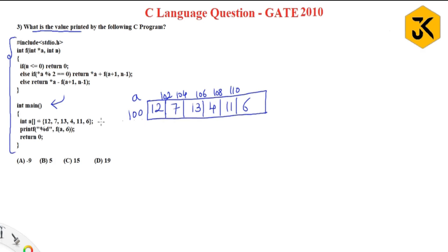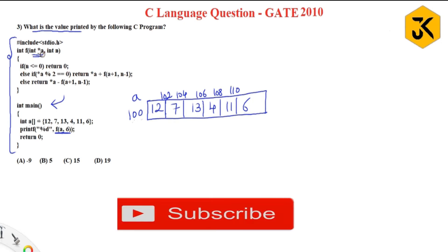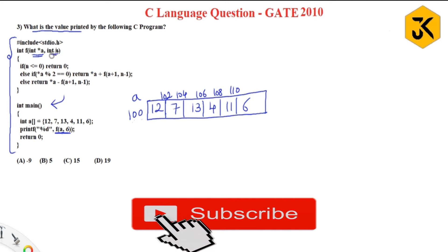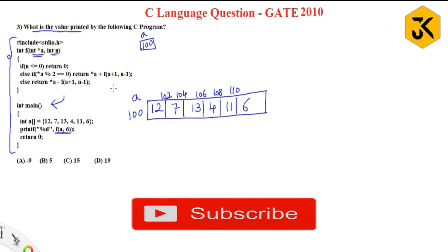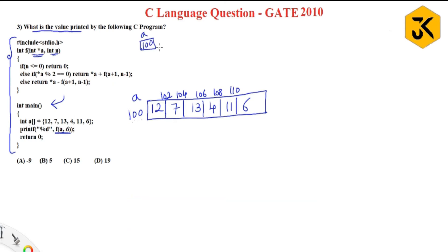Then printf is called with format '%d' and f(a, 6), meaning they are calling function f by passing 'a' and 6. The value of 'a' is address 100. Since we are passing address 100, the function declares a pointer variable: 'a' is a pointer variable containing the address 100, and 'n' contains the value 6.